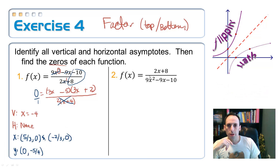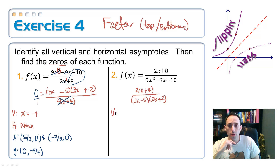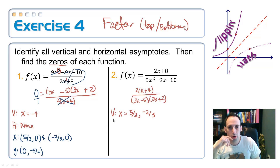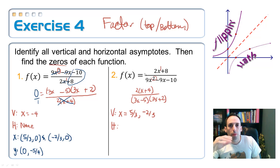Now let's try the same thing with the second function — the reciprocal. We already have it factored with the same factors as before, so this time it's 2(x + 4) on top and (3x - 5)(3x + 2) on the bottom. The vertical asymptotes are where the denominator equals 0: at x = 5/3 and x = -2/3 — that's switched with the x-intercepts from the previous function because we just flipped the equation. For the horizontal asymptote, the highest power on top is 1 and the denominator's highest power is 2, so the denominator is getting bigger faster — we're approaching 0, so y = 0.